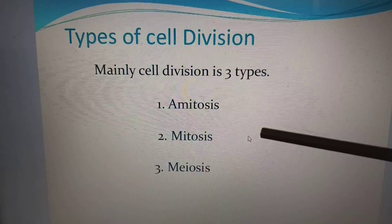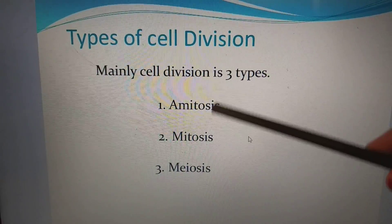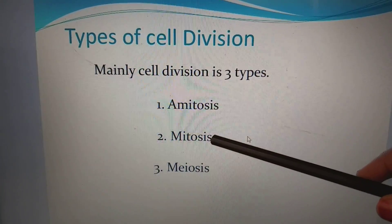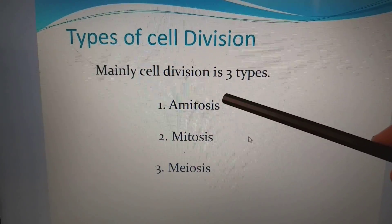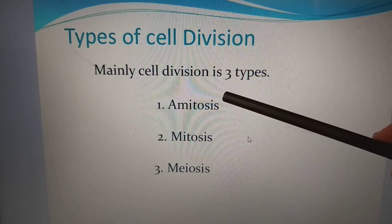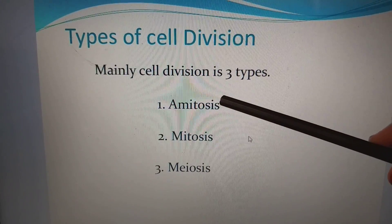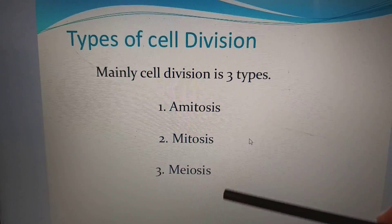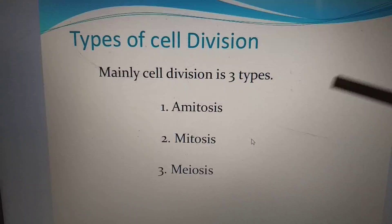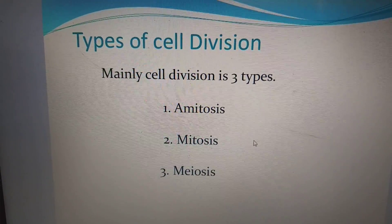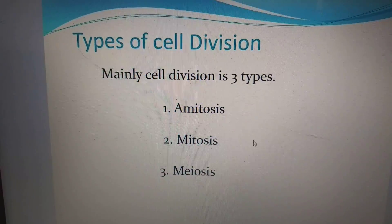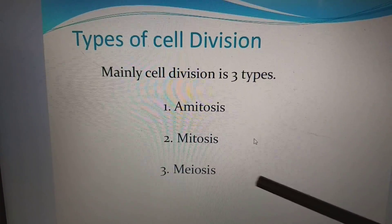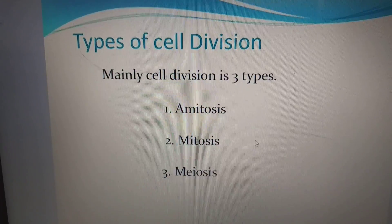Mitosis means thread-like formation, so we can see a thread-like formation in this division. Amitosis means absence of thread-like formation during cell division, because of that it is named amitosis. Meiosis means reductional division — initially the parental cell is diploid, and finally the daughter cells will be haploid, because of that it is named meiosis.